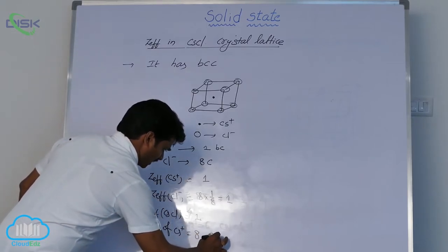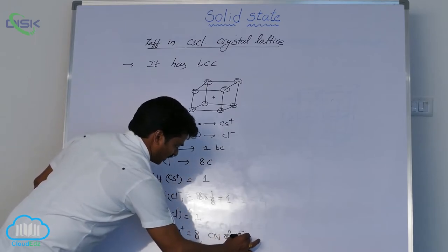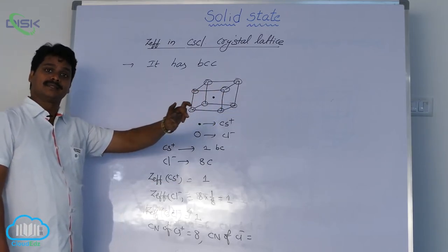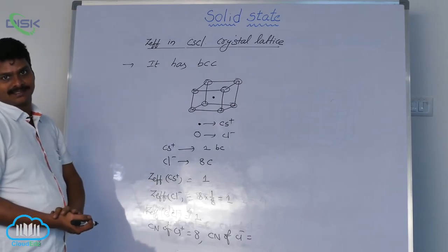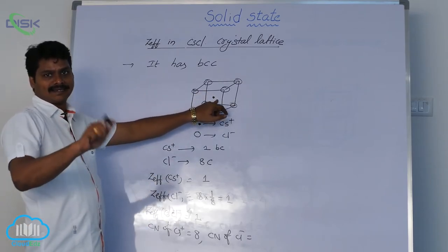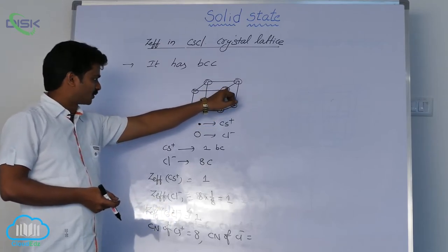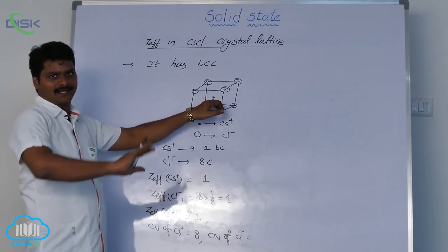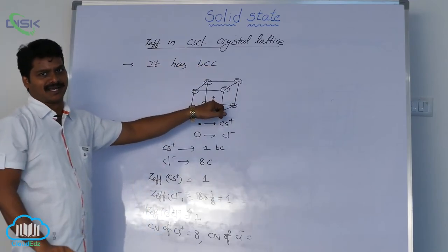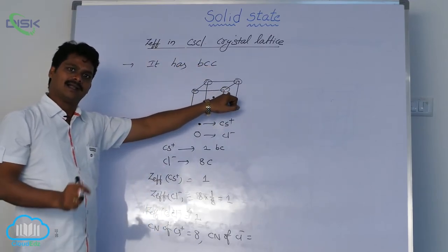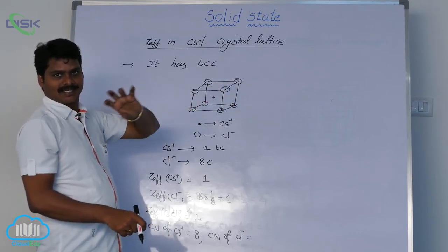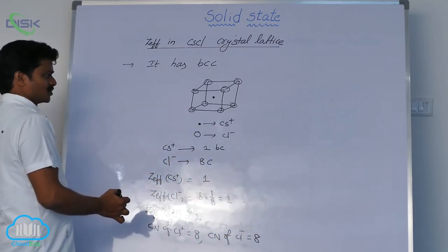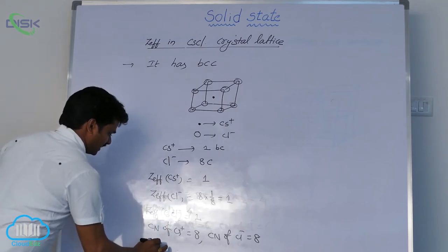Similarly, coordination number of chloride ion: the chloride ion is at the corner. A corner atom is shared by eight unit cells. Each unit cell contains one cesium ion at the center, so this chloride ion has its nearest neighbor in this unit cell - one cesium ion. In the remaining seven unit cells, seven cesium ions. So chloride ion is also surrounded by eight nearest cesium ions. Here also coordination number is eight.